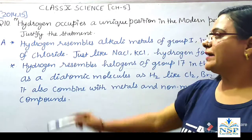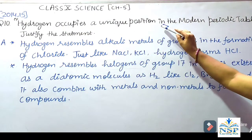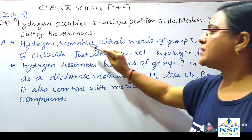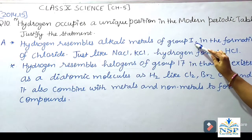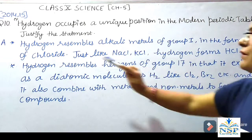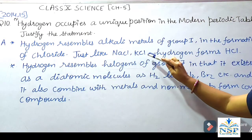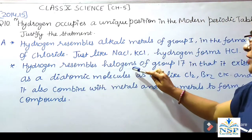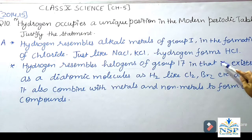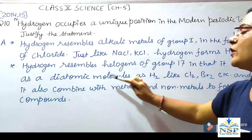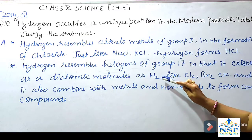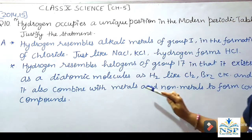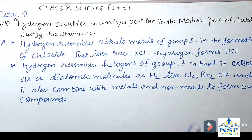Question No. 10: Hydrogen occupies a unique position in the Modern Periodic Table — justify the statement. Hydrogen resembles alkali metals of Group 1 in the formation of chlorides; just like NaCl and KCl, hydrogen also forms hydrogen chloride. Hydrogen also resembles halogens of Group 17 in that it exists as a diatomic molecule H₂, like Cl₂ and Br₂, and it combines with metals and non-metals to form covalent compounds.